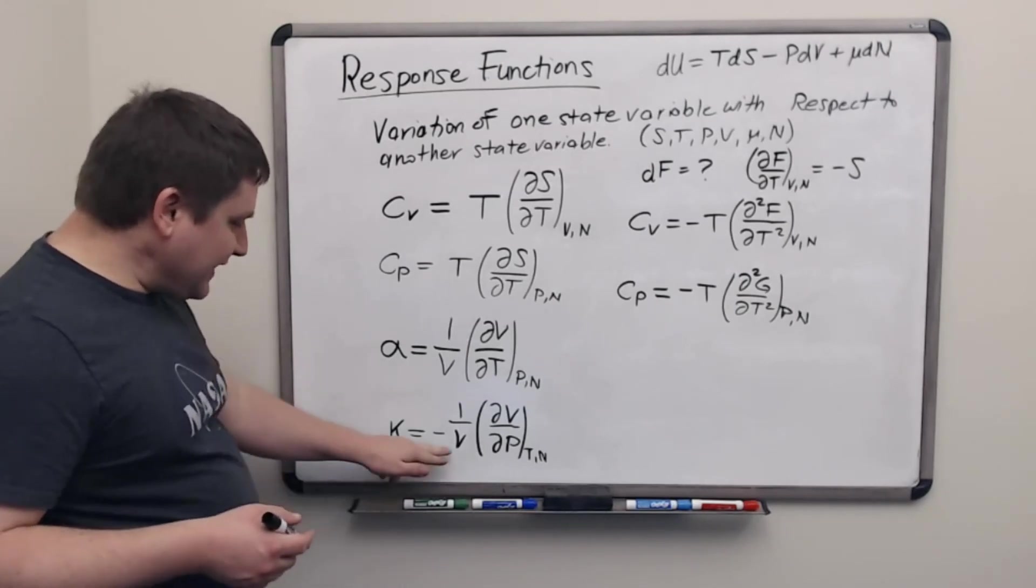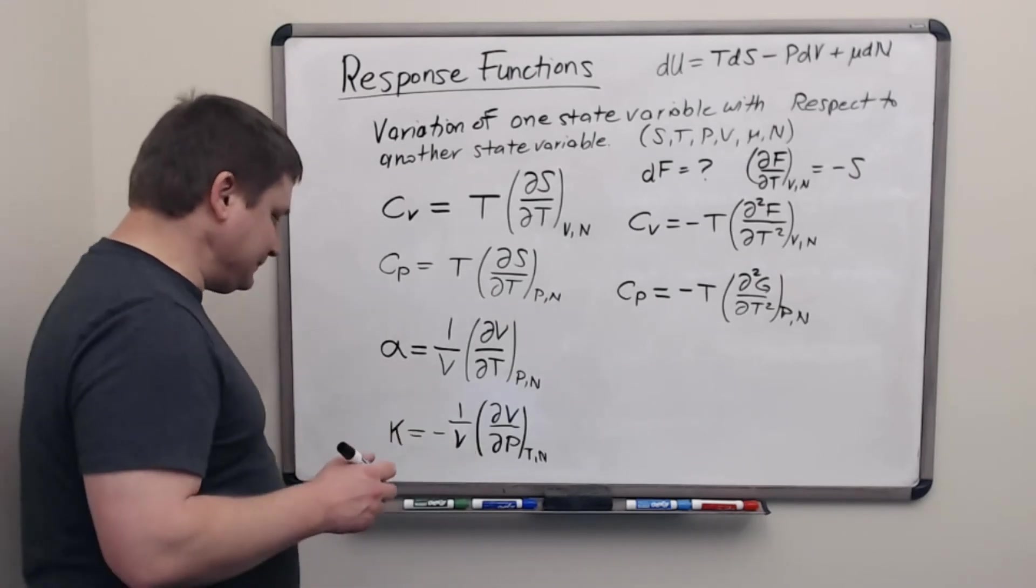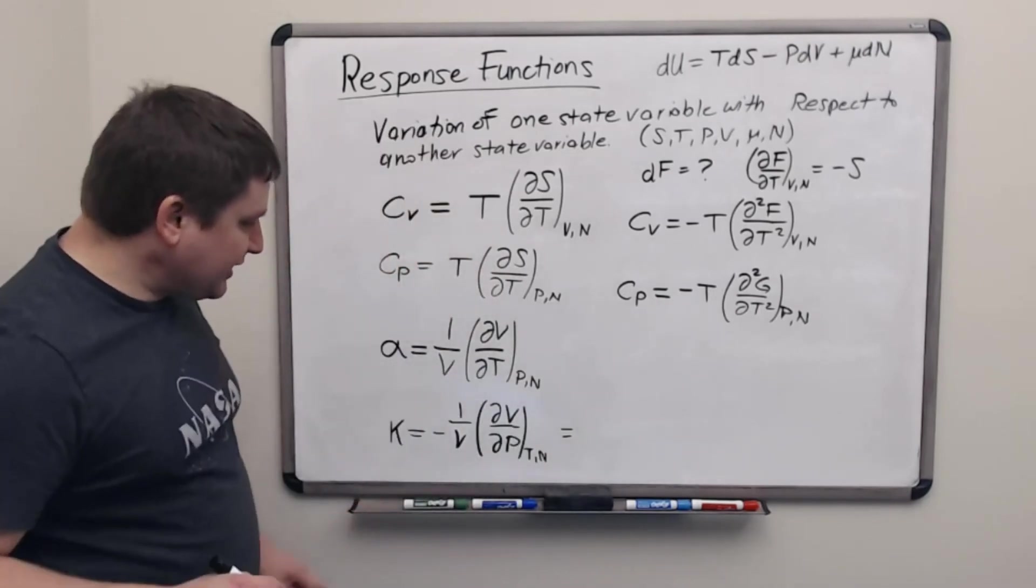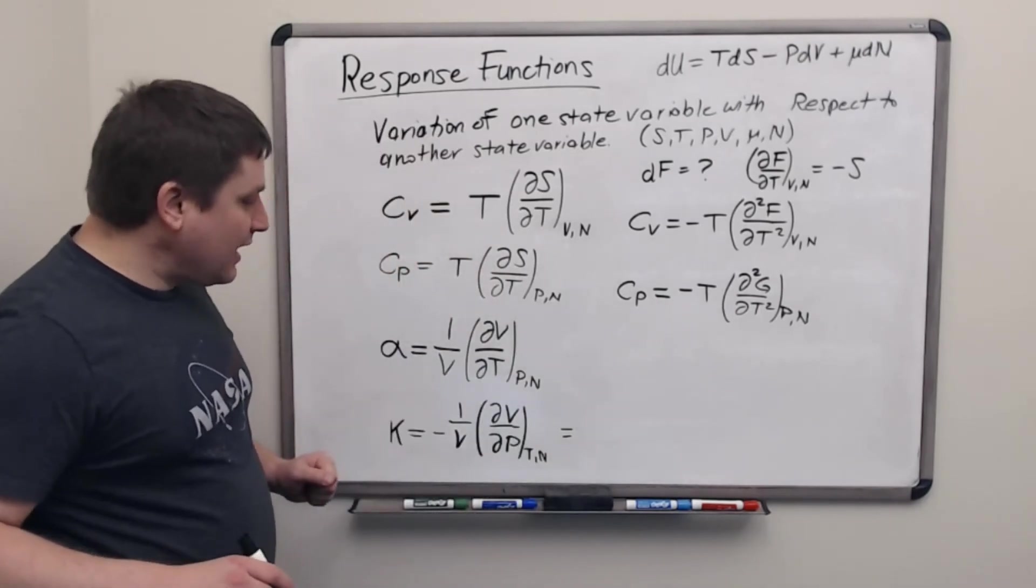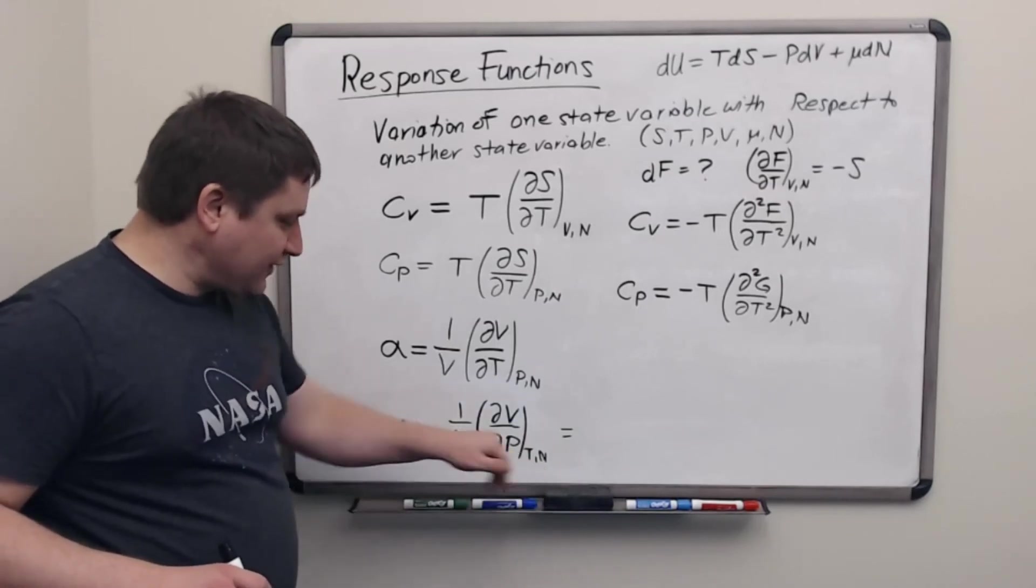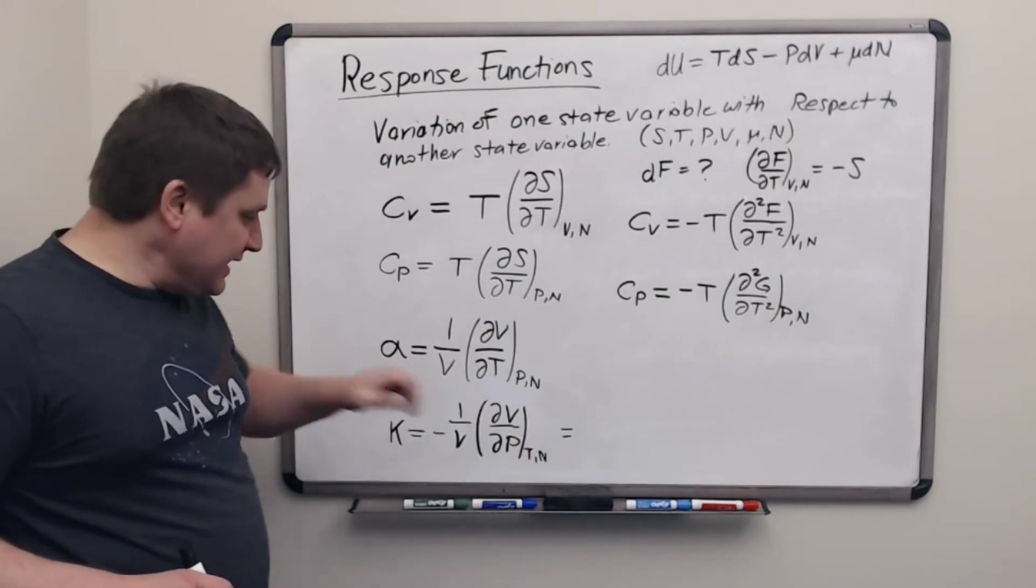For the next one, let's actually first do the bottom row here, the compressibility. Here I'm looking at volume and the variables are pressure, temperature, and particle number. So this is going to come from, again, the Gibbs free energy.